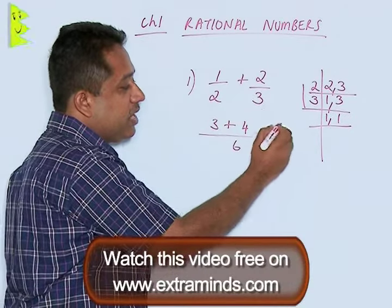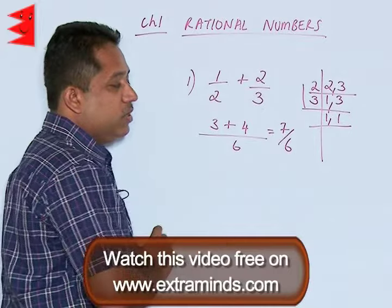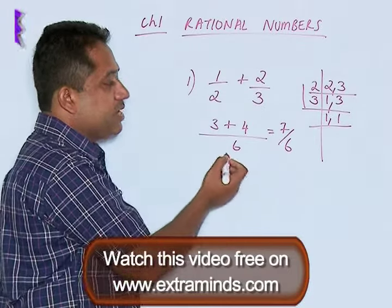So 3 and 4 can now be added, we are going to get 7 upon 6. So this is the method of addition of rational numbers.